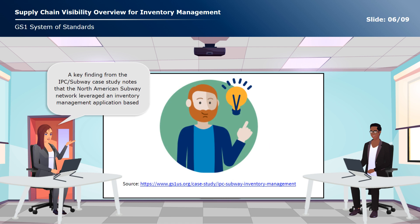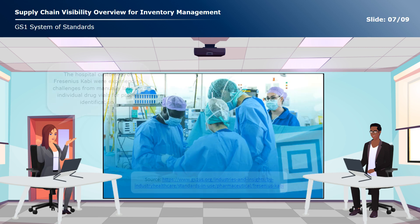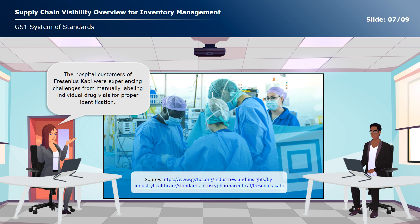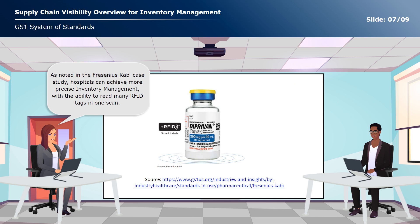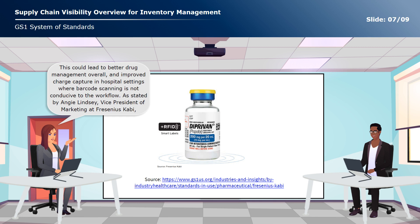A key finding from the IPC Subway case study notes that the North American Subway network leveraged an inventory management application based on GS1 standards to transform a time-consuming weekly process into a more accurate automated system that only takes minutes. The hospital customers of Fresenius-Kabi were experiencing challenges from manually labeling individual drug vials for proper identification. By tagging the vials with GTIN-encoded RFID tags at the manufacturer, Fresenius-Kabi simplified the regulatory compliance process while also enabling enhanced inventory management.